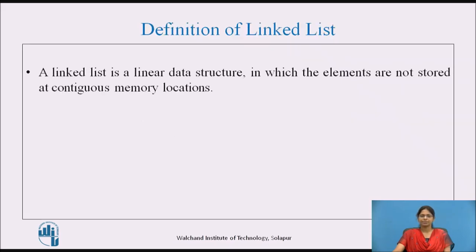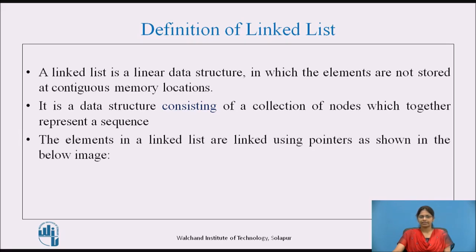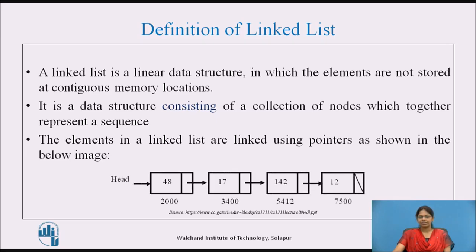Definition of linked list: A linked list is a linear data structure in which the elements are not stored at contiguous memory locations. It is a data structure consisting of a collection of nodes which together represents the segments. The elements in a linked list are linked using pointers. Each node is at a different location, linked by pointers, with the head node pointed to by the head and the last node terminated by null.